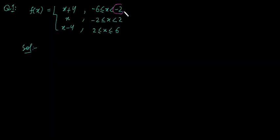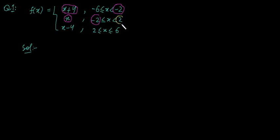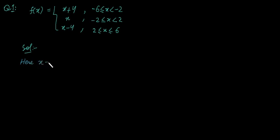The first turning point is minus 2, because we can see that for values of x to the left and to the right of minus 2, the function is defined by two different formulas — x plus 4 on the left side and x on the right side. Similarly, the second turning point is x equals 2, because the function is defined by x for the left side of 2, and x minus 4 for the right side of 2. So x equals minus 2 and x equals 2 are the turning points.